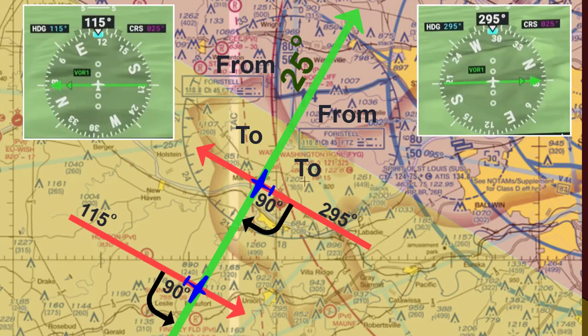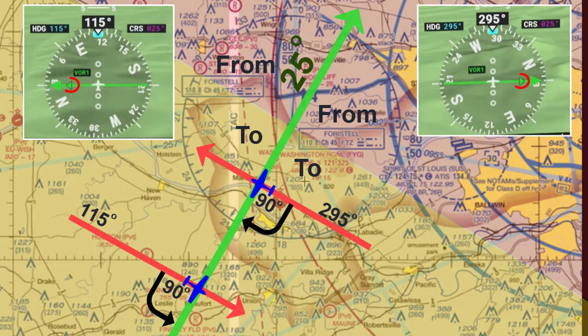Now notice in the still shot in both examples, the D-bar is now centered for both flights, showing I am now centered right over the 25-degree radial, again on the TO side. Notice again the TO arrow in both examples. And of course, I won't be centered long as I pass by.